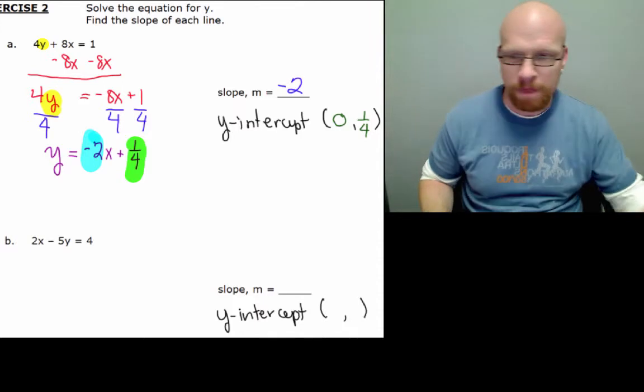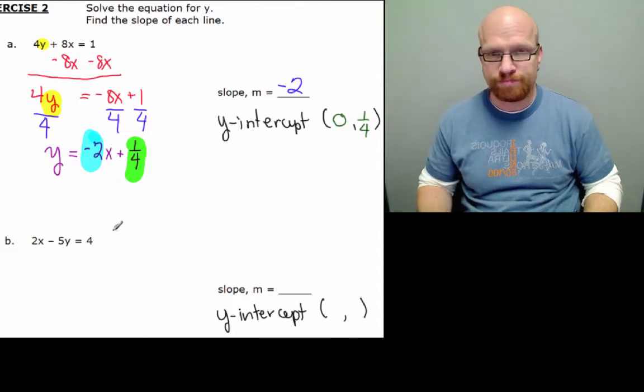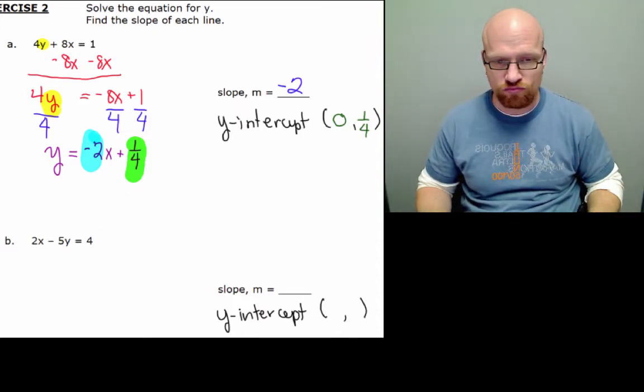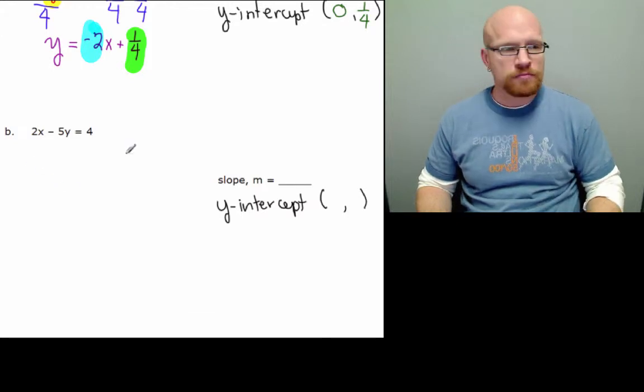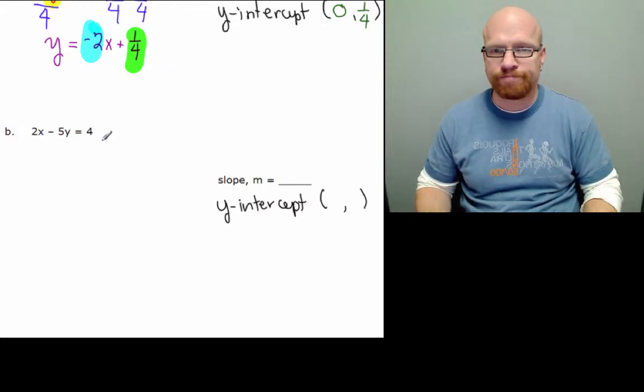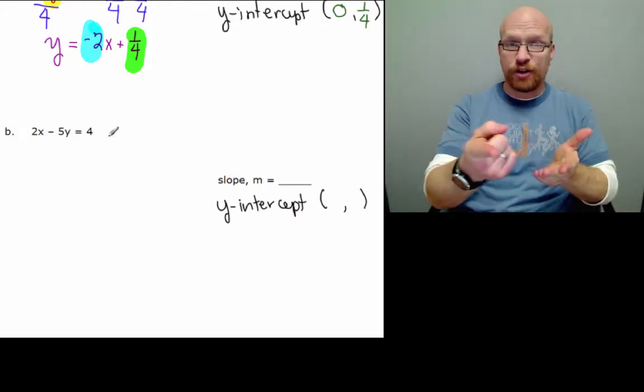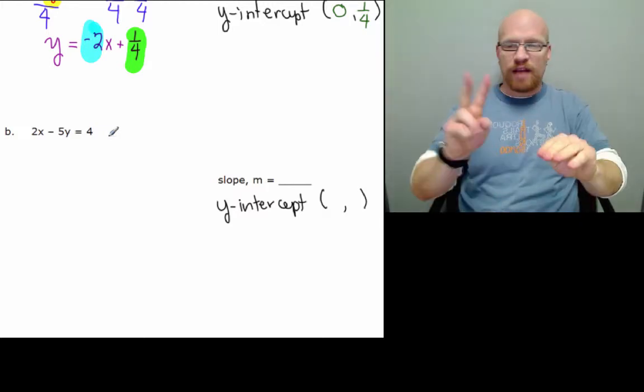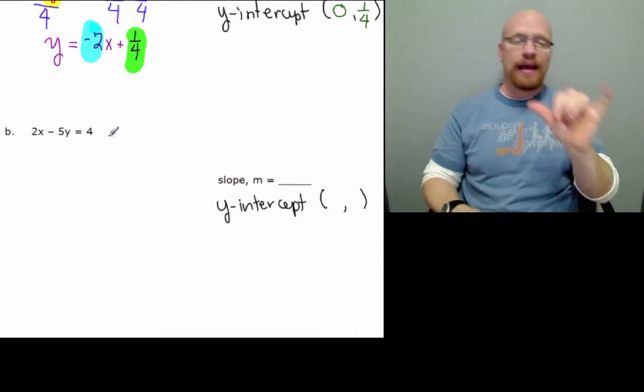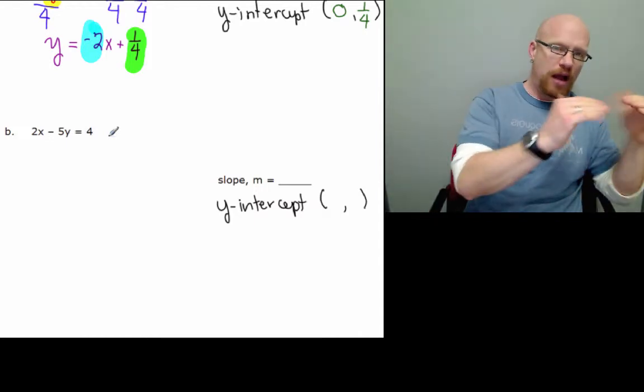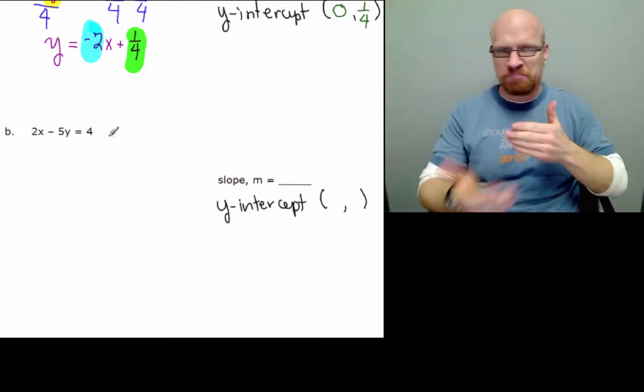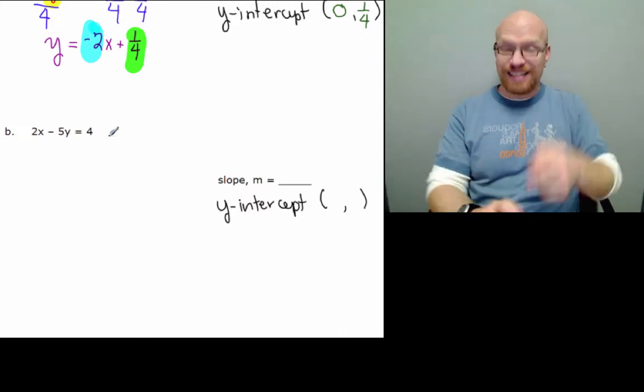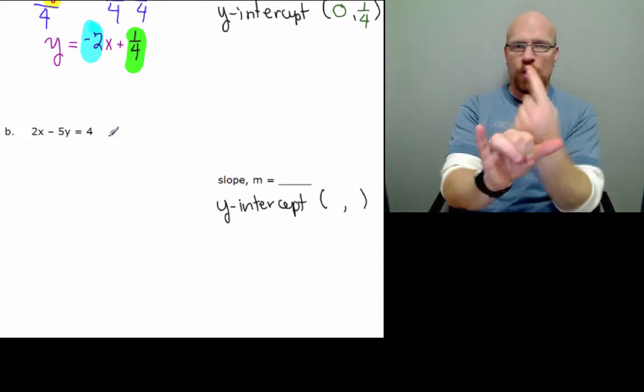Let's go to the next example now. Here, that's in what we call standard form. We have an x-term and a y-term and an equal constant. No matter for now. But the point is, y is not alone. It's not isolated.